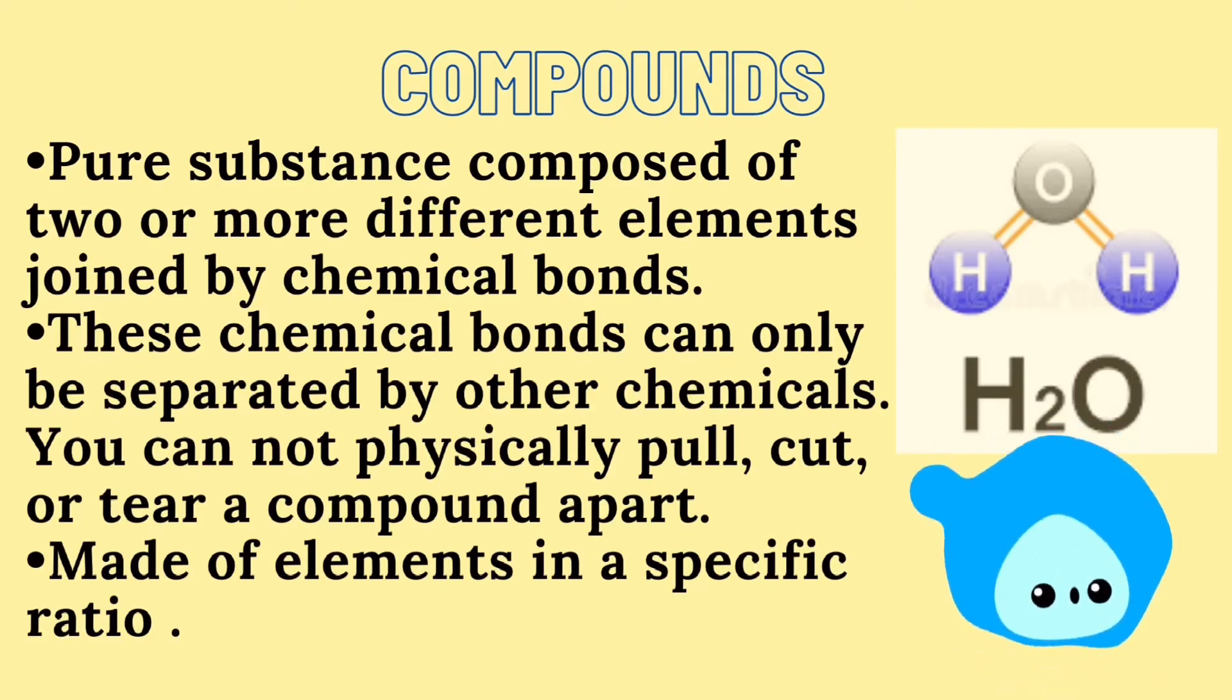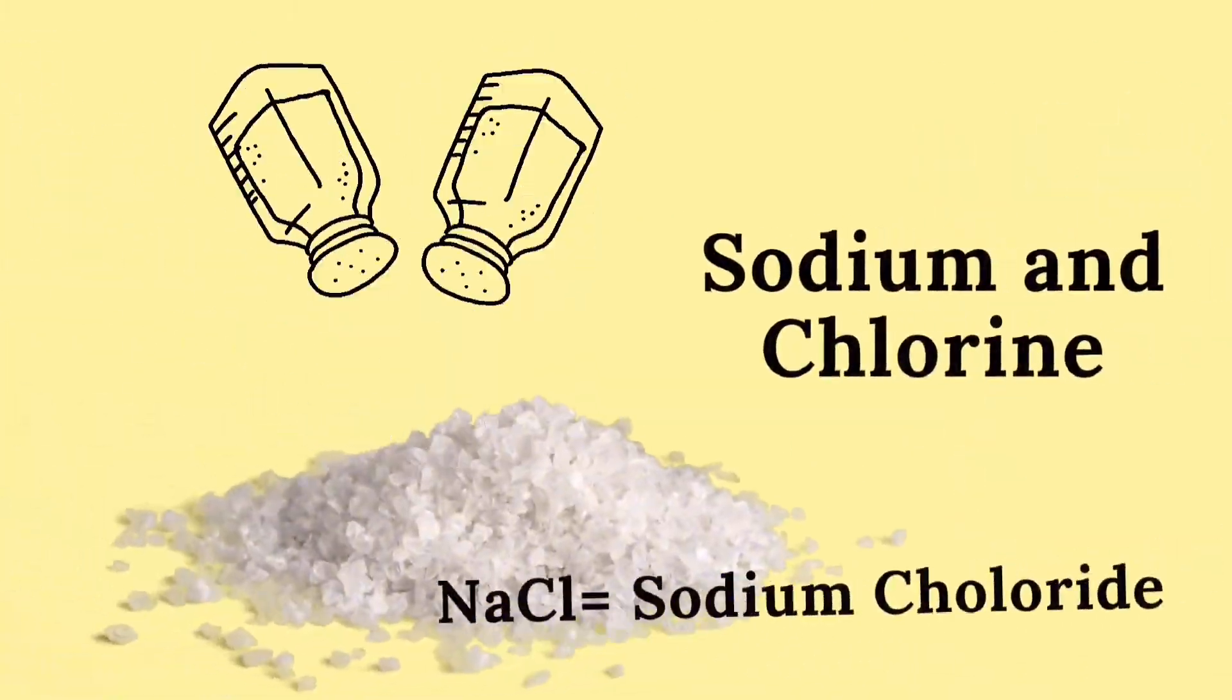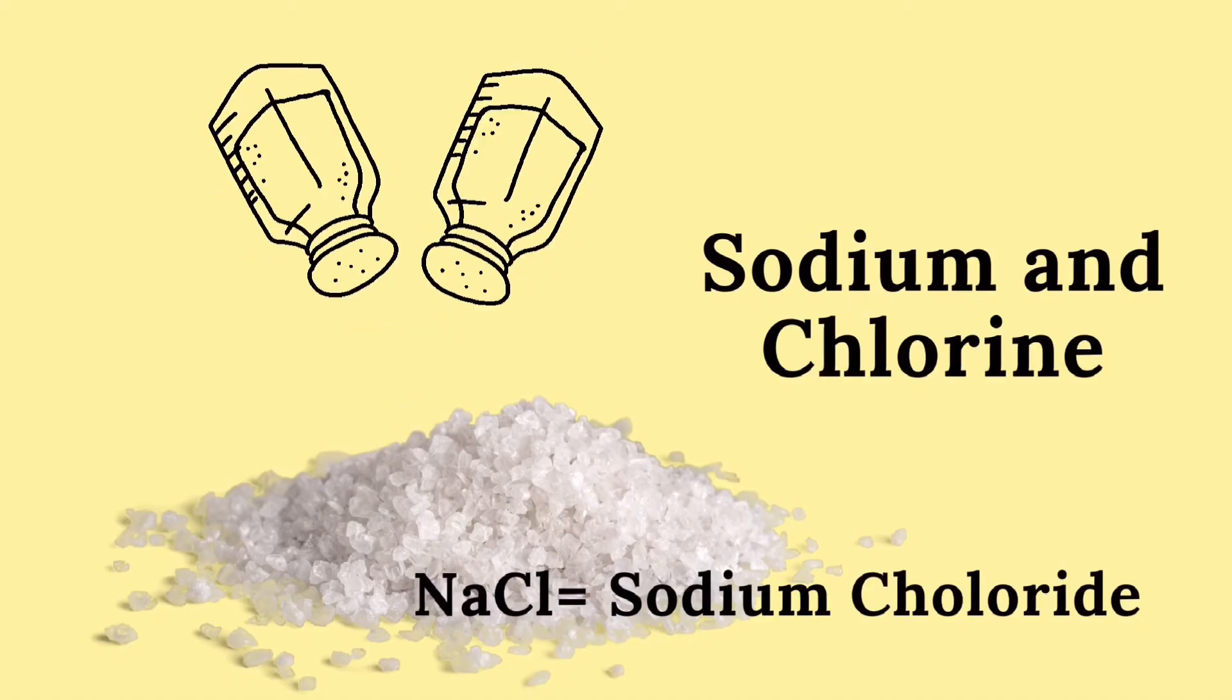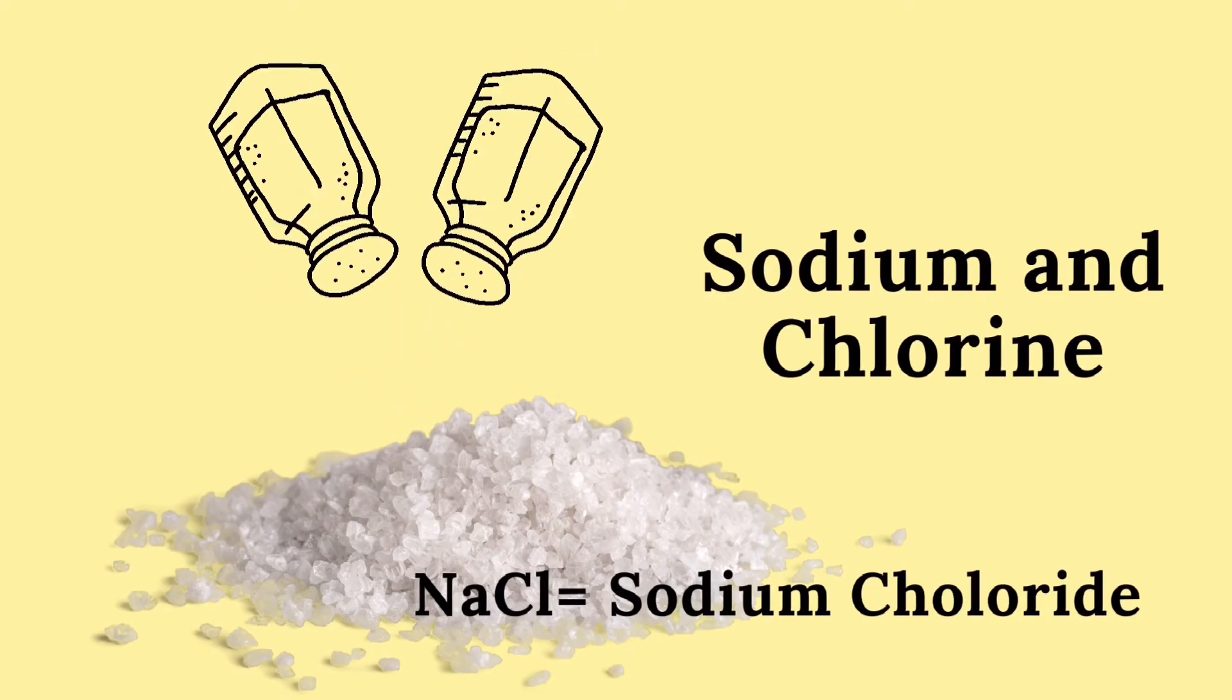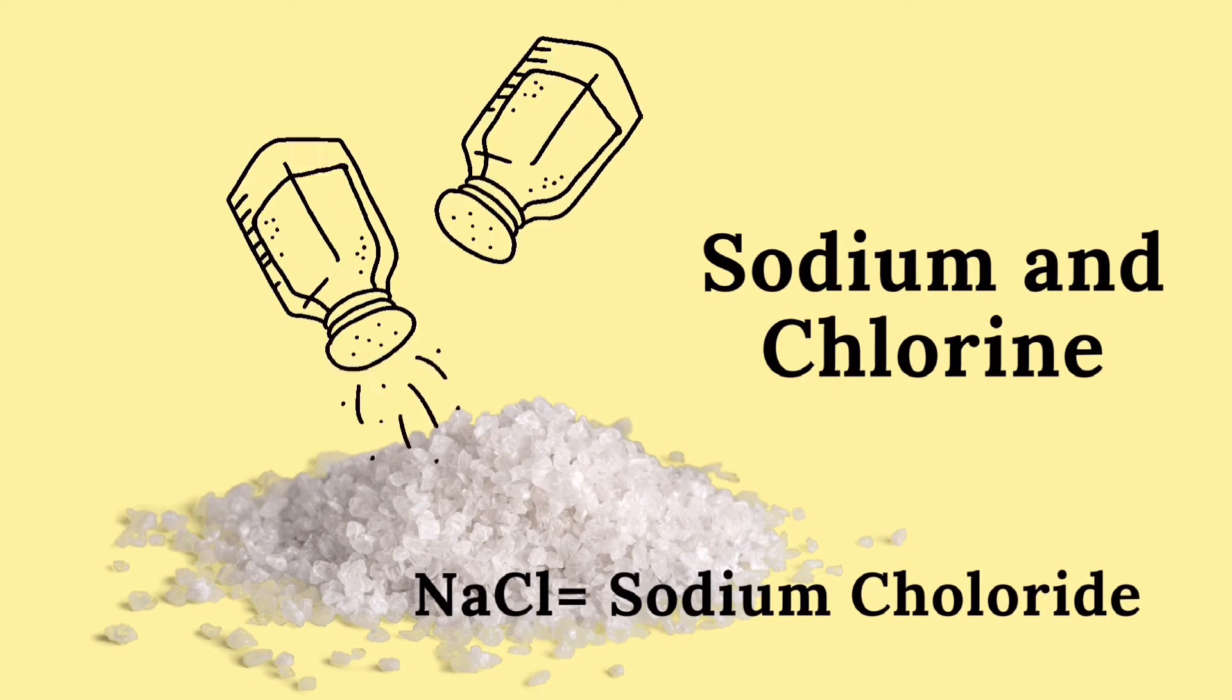A compound is made up of elements in a specific ratio. Salt is a common compound. What two elements is it made from? It is sodium and chlorine that makes it sodium chloride.